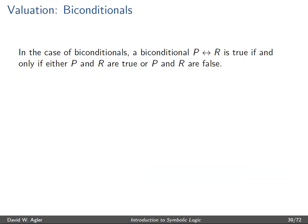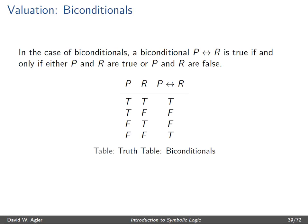For biconditionals, P ↔ R is true provided both P and R share the same truth value — that is, both are true or both are false. In row 1, P and R are both true, so P ↔ R is true. In row 4, P and R are both false, so the biconditional is also true. In rows 2 and 3, P and R don't share the same truth value — P is true and R is false, or P is false and R is true — so the biconditional is false in those cases.